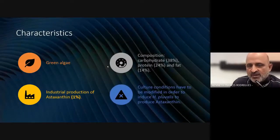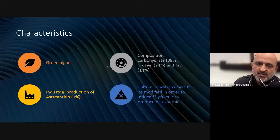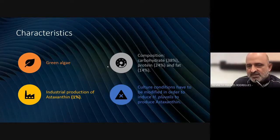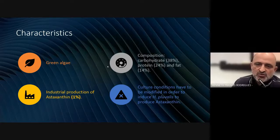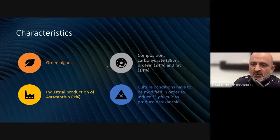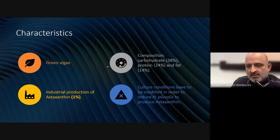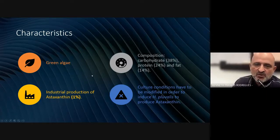First of all, Haematococcus pluvialis is a green algae, although it appears to be red because of the production of carotenoids. It is used for the industrial production of astaxanthin. The composition of the algae is carbohydrate 38%, protein 24%, and fat 14%. These components can also be used in the industrial production of carbohydrates and proteins for animal or human consumption, and the culture conditions can be modified to induce the production of astaxanthin in Haematococcus pluvialis.